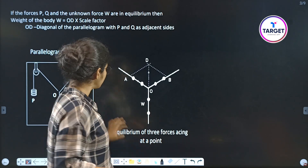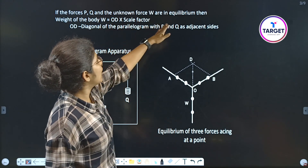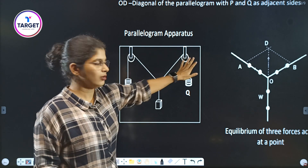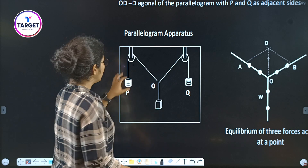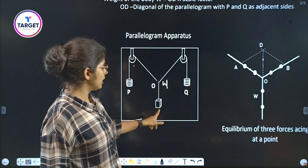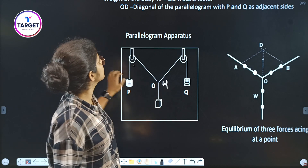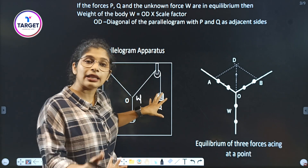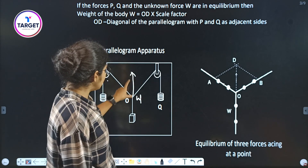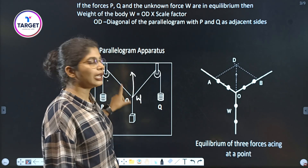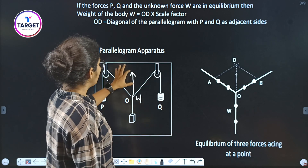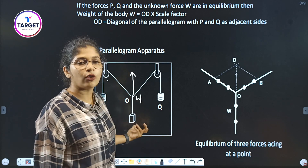The two known forces P and Q and the unknown force W are in equilibrium. In the apparatus diagram, P and Q are the masses attached on both sides through the pulleys, and W is the unknown mass hanging at the center point O. The weight of the body is found as OD multiplied by the scale factor, where OD is the diagonal of the parallelogram, giving the weight of the body.